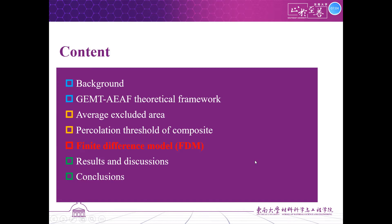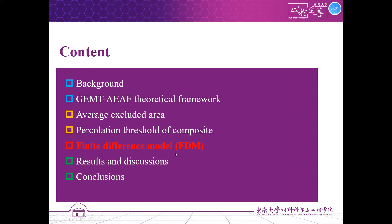By substituting the average excluded area formula into the generalized effective medium theory, we can theoretically predict diffusivity. However, the reliability of the theoretical diffusivity is still unknown. Therefore, we employ a finite difference model to numerically measure the diffusivity. In the finite difference model, the governing equation is Fick's second law. The top and bottom boundaries are set as Neumann boundary conditions, and the left and right boundaries are set as Dirichlet boundary conditions. The initial concentration is 0 for all samples, and the explicit difference scheme is employed.